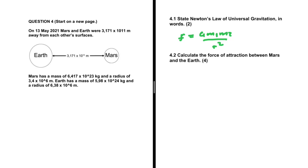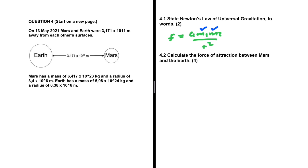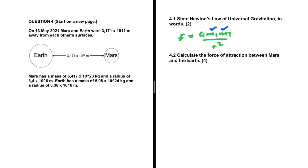Each particle in the universe attracts every other particle with a gravitational force that is directly proportional to the product of their masses and inversely proportional to the square distance between their centers. That is Newton's Law of Universal Gravitation.